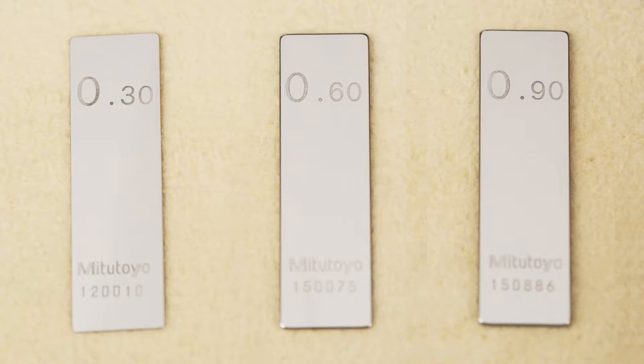These gauge blocks are precision components made of steel with a certification of traceability to NIST. For a DMA1 displacement adjustment, you will need the following: three gauge blocks.